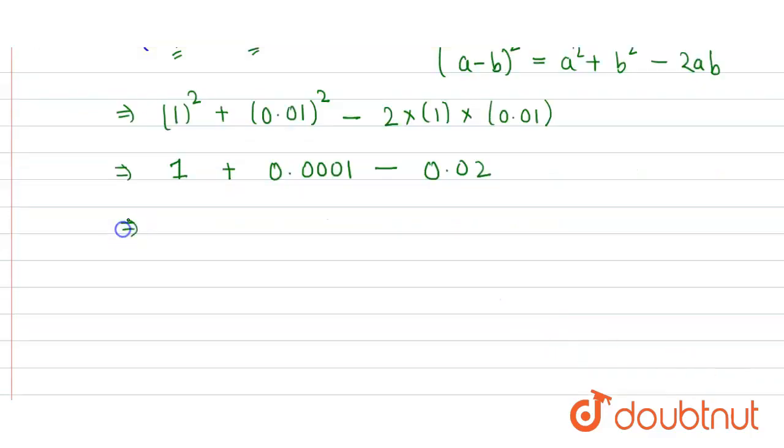So we get, when we add these two numbers, 1.0001 minus 0.02. When we subtract this we get 0.9801. So this is the answer of the first part.